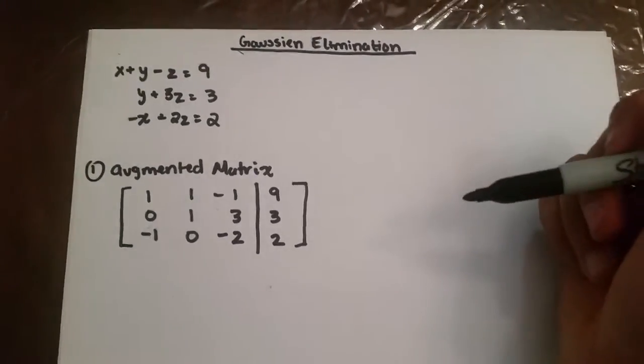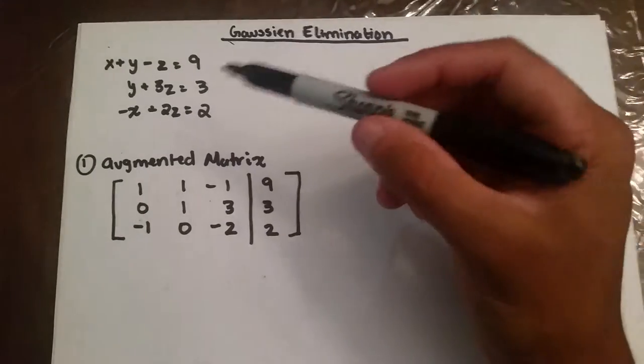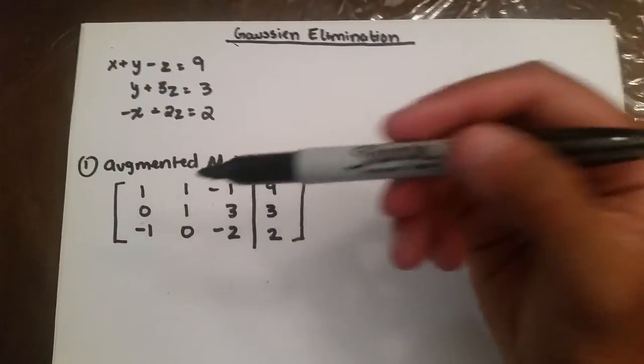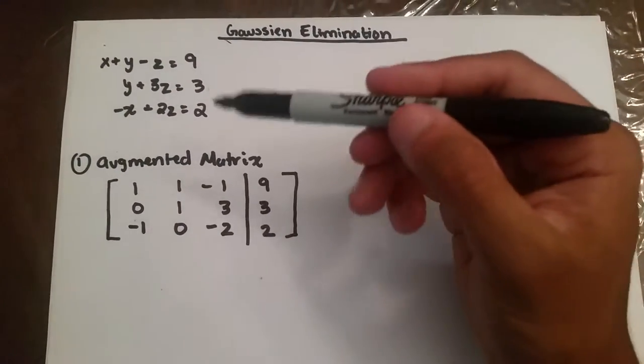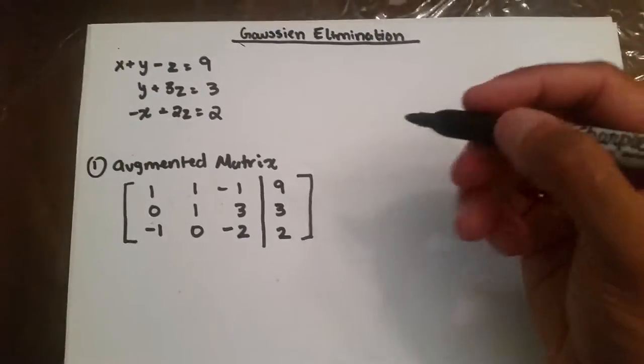Alright class, now we're going to learn how to do Gaussian Elimination. Here we have three equations, and our first step, which I've already done, is to convert the three equations into an augmented matrix.